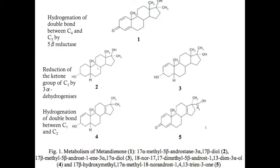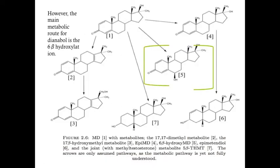Metabolism of Dianabol can have multiple steps. In this diagram, you can see there is a hydrogenation of the double bond between carbon-4 and carbon-5 by 5-beta-reductase. There is also a hydrogenation of the double bond between carbon-1 and carbon-2. The ketone group of carbon-3 can also be reduced by 3-alpha-dehydrogenases. However, the main metabolic route for Dianabol is the 6-beta-hydroxylation pathway. This metabolite has an additional hydroxyl group on carbon-6, outlined in green in the diagram.